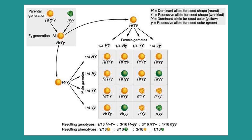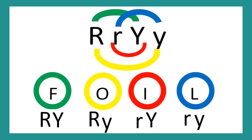And for the phenotypes: 9 round yellow seed, 3 round green seed, 3 wrinkled yellow seed, and 1 wrinkled green seed. Just to clearly show the FOIL method — F stands for first, O for outer, I for inner, and L for last.